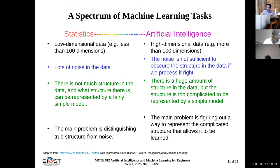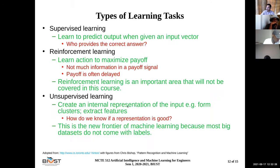So there are, at least at this time, three types of machine learning tasks: supervised learning, reinforcement learning, and unsupervised learning.